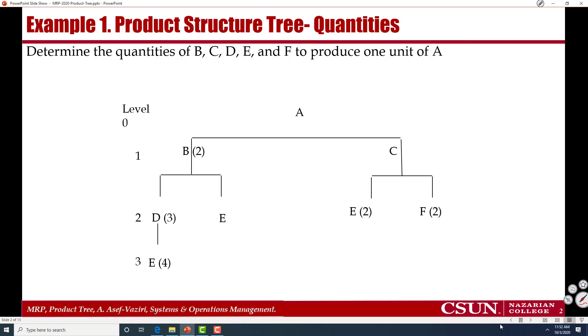This is a product tree. We have a product A. To produce each unit of product A we need two units of product B and one unit of product C. For each unit of product C we need 2E and we need 2F.